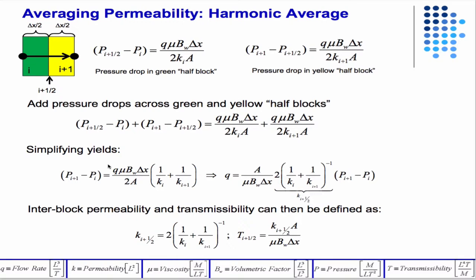And then when you add them back together to get the total pressure drop from i to i plus 1, you get this equation, and after some rearrangement, you can see that what we called k i plus 1 half has this form here. And this is called the harmonic mean, the harmonic average.